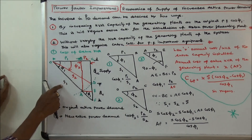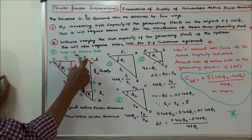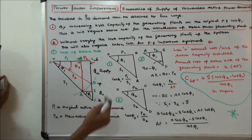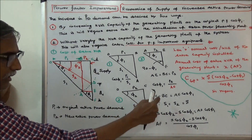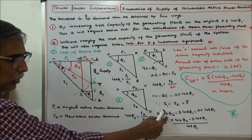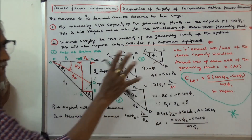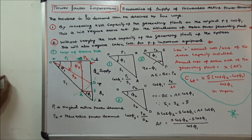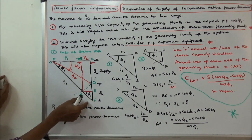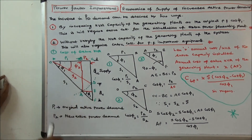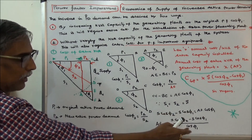We are keeping S1 equal to S2. Here, OC minus BC equals AF into cos phi 1. OC is S into cos phi 2, and BC is S into cos phi 1. That gives AF into cos phi 1. Therefore, AF — the rating of the additional generating plant — is equal to S into (cos phi 2 minus cos phi 1) divided by cos phi 1.